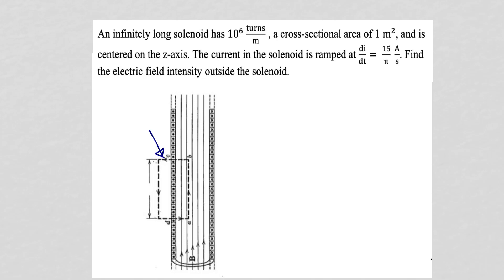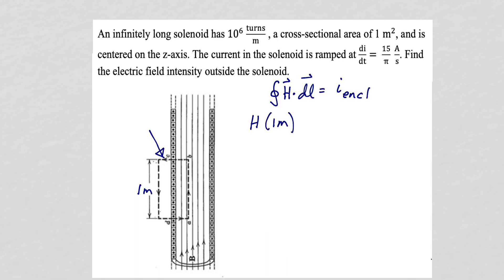This dashed line will represent an Amperian loop, and we'll make the length of it 1 meter, so that means there are 10 to the 6 turns inside the Amperian loop. When we integrate from A to B, we'll get the magnetic field intensity inside the solenoid times the length from A to B, which is 1 meter. When we integrate from B to the solenoid or from the solenoid to A, our dl is perpendicular to the magnetic field intensity, so H dot dl will be zero and we'll get no contribution. And of course, when we're outside the solenoid, the magnetic field intensity is zero, so again we will get no contribution. So the integral of H dot dl around our Amperian loop will be H inside the solenoid times 1 meter.